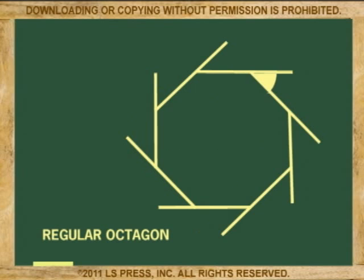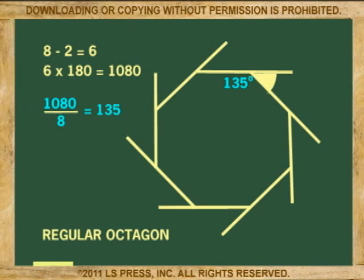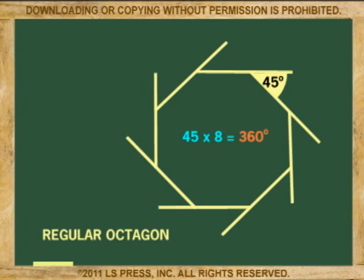Now let's try an octagon. 8 minus 2 equals 6. 6 times 180 gives 1080, which is the sum of all the interior angles. Divide by 8 to get one interior angle: 135 degrees. Now to get one exterior angle: 180 minus 135 equals 45. For the sum of all the exterior angles of an octagon, multiply 45 by 8, and you get 360 again.